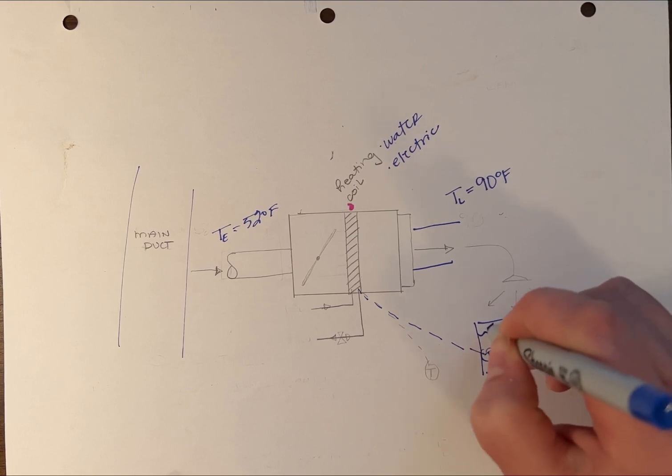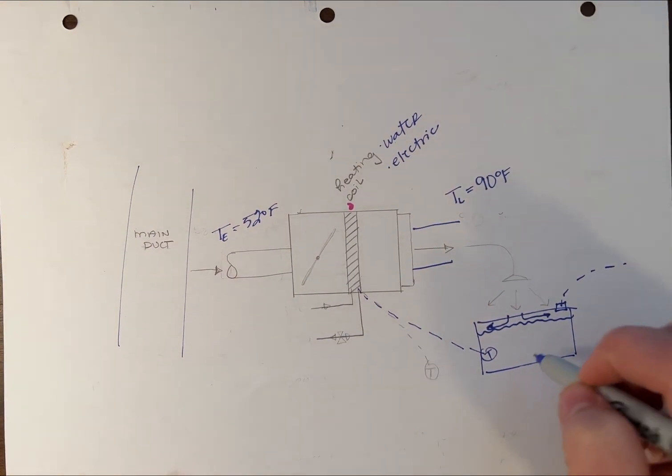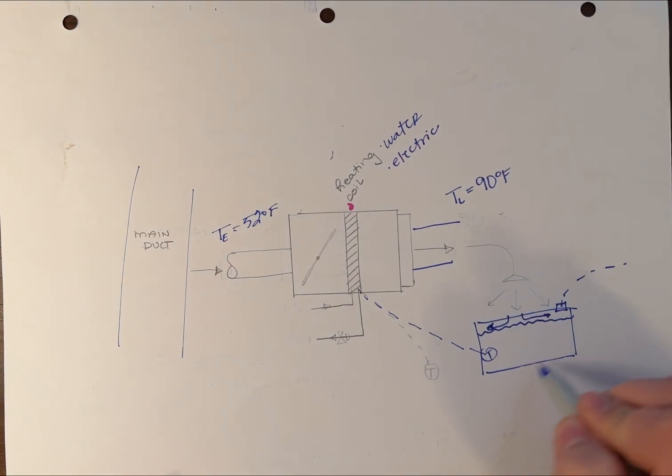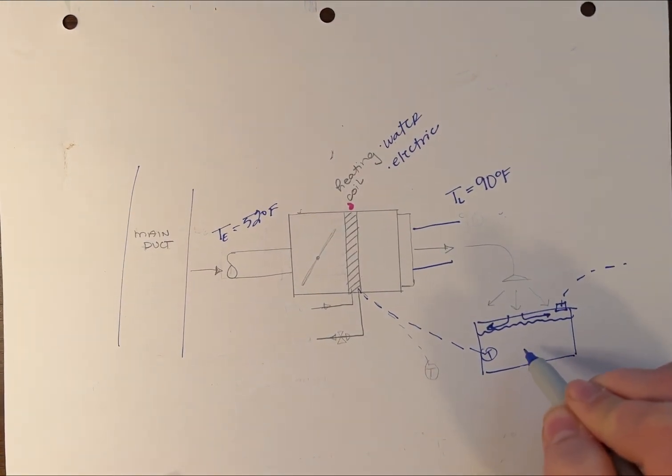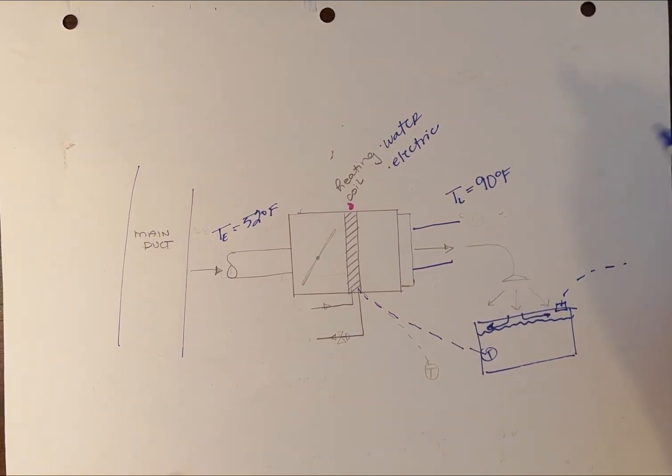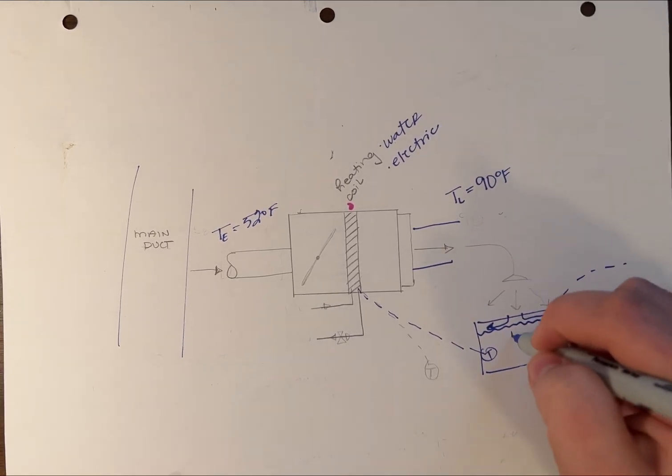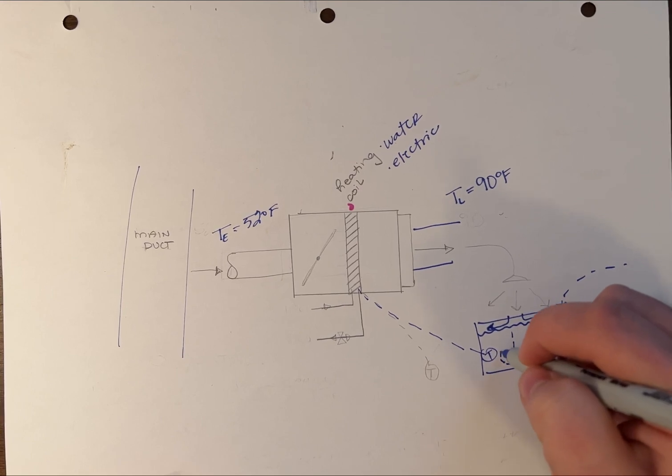All that hot air will remain at the top and get returned back to your main air handling unit, so the occupiable space below doesn't get the heat needed. We want the leaving discharge temperature around 90 degrees so the air drops and recirculates properly.